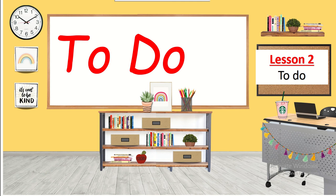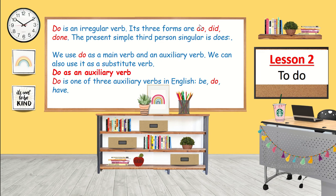Good morning, dear students. Today we have Lesson 2 — it's about 'do'. Do is an irregular verb; its three forms are do, did, and done. The present simple third person singular is 'does'. We use 'do' as a main verb, an auxiliary verb, and also as a substitute verb.